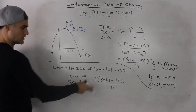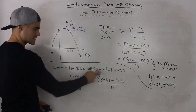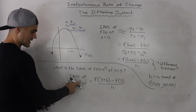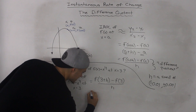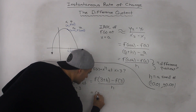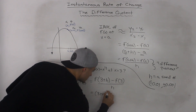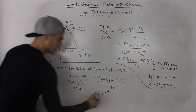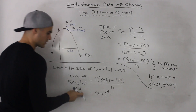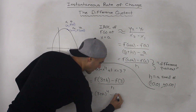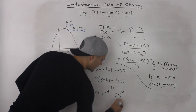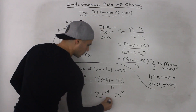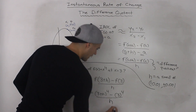Now since we know our function is defined as x to the power of 4, f of 3 plus h would be 3 plus h to the power of 4, minus f of 3, which is 3 to the power of 4, which equals 81, all over h.